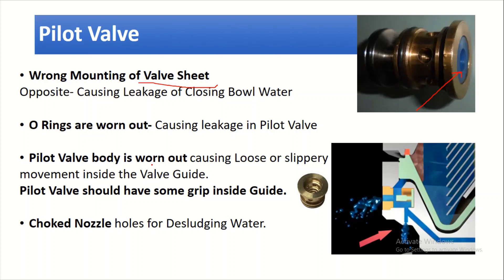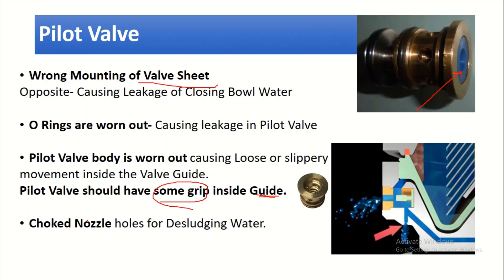The pallet well body can be worn out, causing loose or slippery movement inside the wall guide. If the pallet well body shaft is very worn out, it will easily slip in and out. We want there to be a tight grip inside the guide. Another reason is choked nozzle holes for desludging water. If the nozzle holes are clogged, it will also cause purifier overflowing.